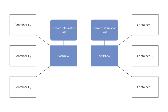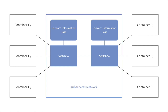The links or edges of the graph consist of links between containers and switches, and links between switches and switches. Messages may only travel between links. So as long as a network of switches, their forward information bases, and their connections satisfy the constraints of the Kubernetes network specification, it is a valid Kubernetes network implementation.